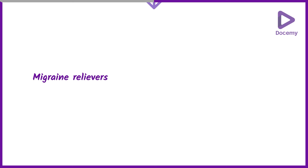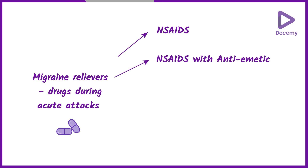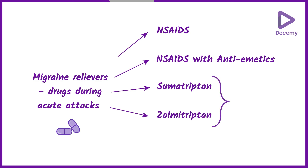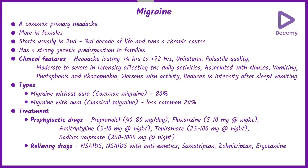These are the drugs used for migraine relief — to relieve the headache during acute attacks. NSAIDs can be used, or NSAIDs along with antiemetics. Sumatriptan and zolmitriptan, together called the triptan group of drugs, can be used, or ergotamine can be used.